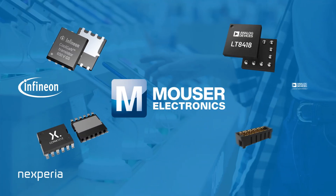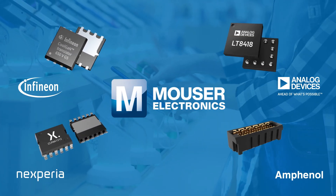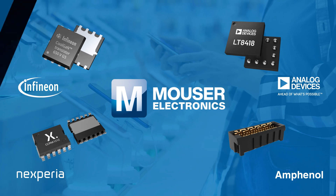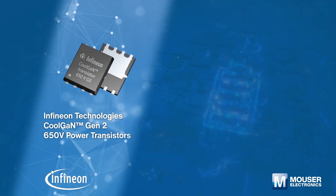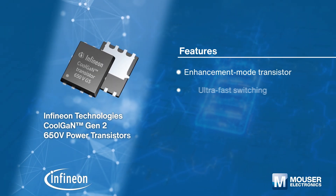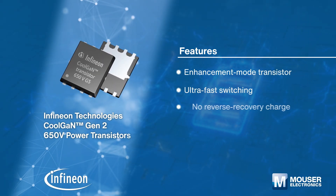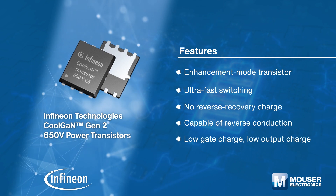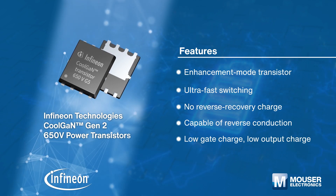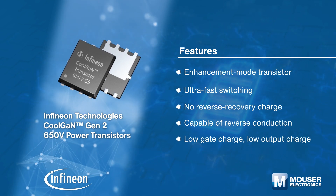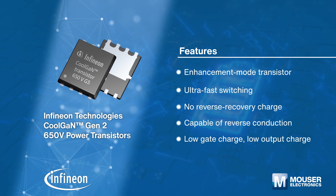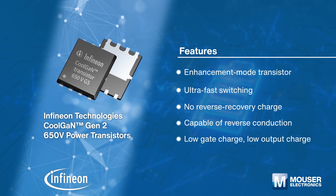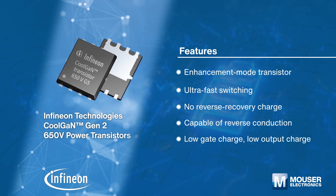At Mouser's one-stop shop, you'll find the components and solutions required for GaN power. Infineon Technologies' CoolGAN Gen2 650V power transistors feature highly efficient GaN transistor technology for power conversion in voltage ranges up to 650V, improving system efficiency and power density with ultra-fast switching.